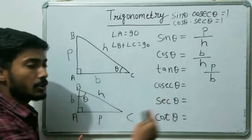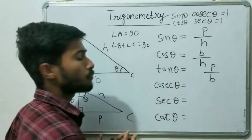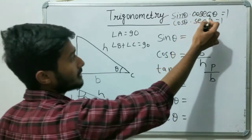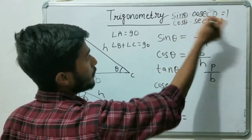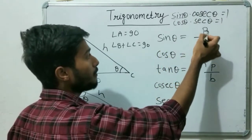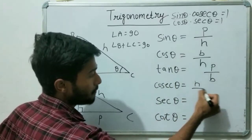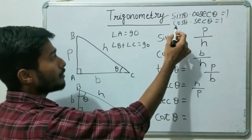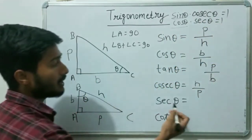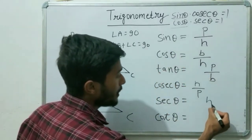All problems in trigonometry are based on formulas. If you practice, you can learn these formulas easily. So if you know the value of sin theta, what will be the value of cosec theta? Cosec theta will be 1 upon sin theta — you just reverse the value of sin theta, giving you H upon P. Similarly, sec theta equals 1 upon cos theta, so you reverse cos theta to get H upon B.